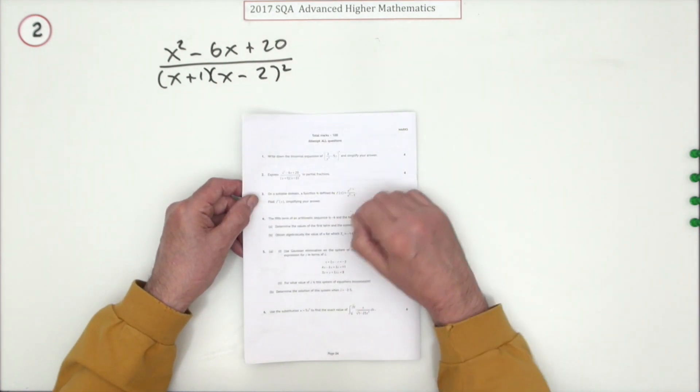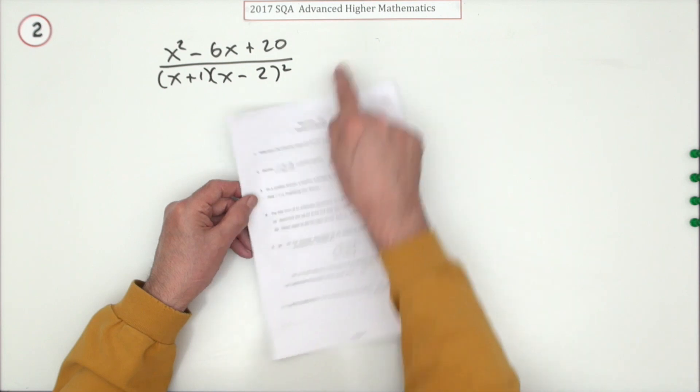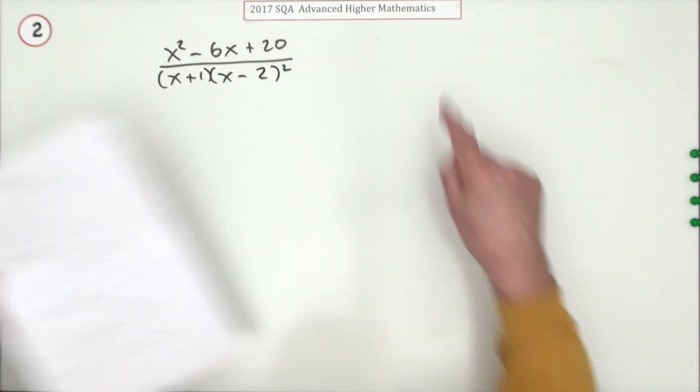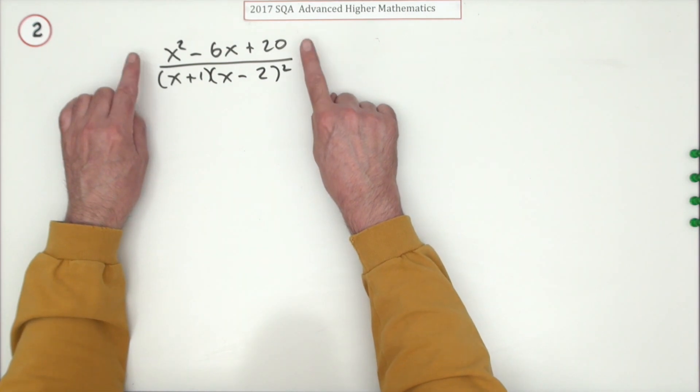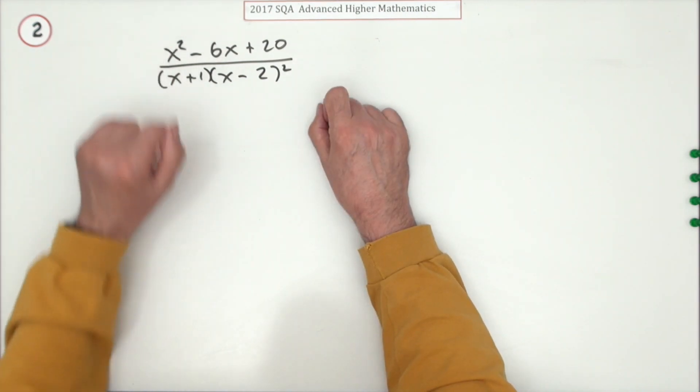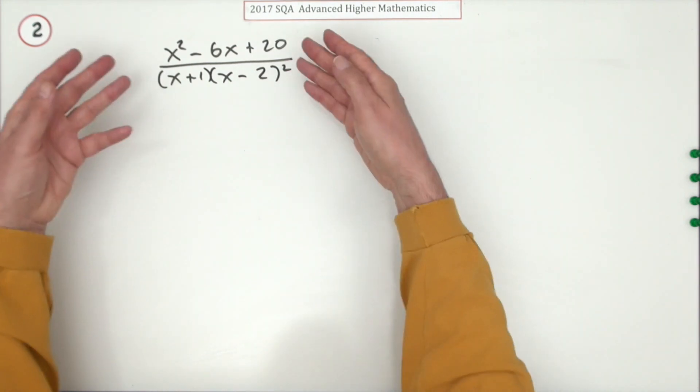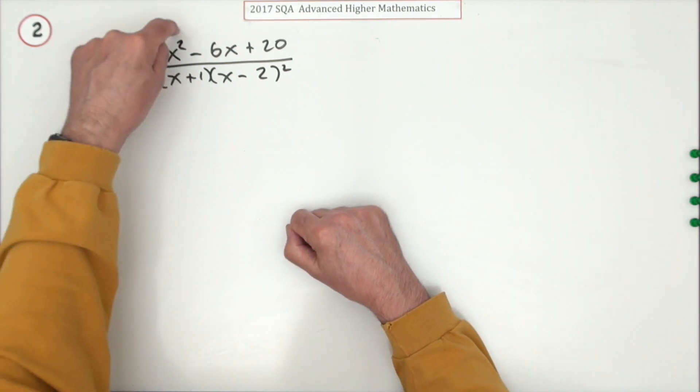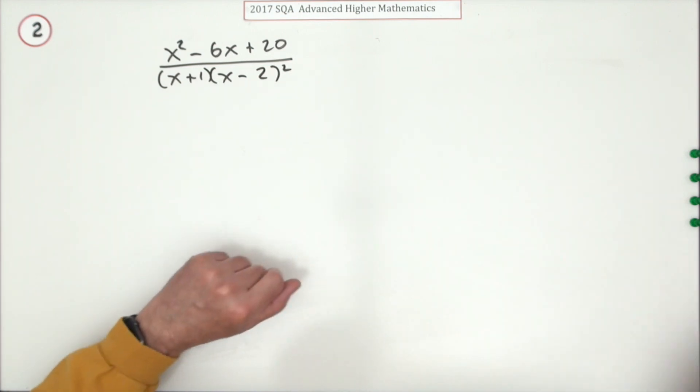Number two from the 2017 Advanced Higher Maths. Four marks for partial fractions - resolve this into partial fractions. First thing to check: is this a proper fraction? Is the degree of the numerator less than the degree of the denominator? Because if it isn't, you have to divide it in first. I've got x squared on top and x times x squared is x cubed underneath.